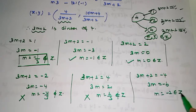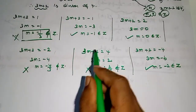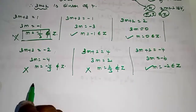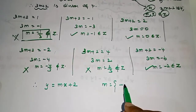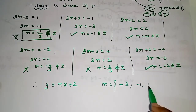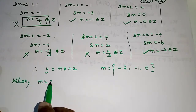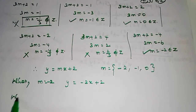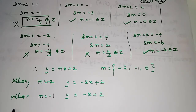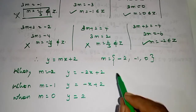So the valid integer values of m are: m = −1, m = 0, and m = −2. When m = −1, substituting into y = mx + 2 gives the line equation y = −x + 2. When m = 0, y = 2. When m = −2, y = −2x + 2.